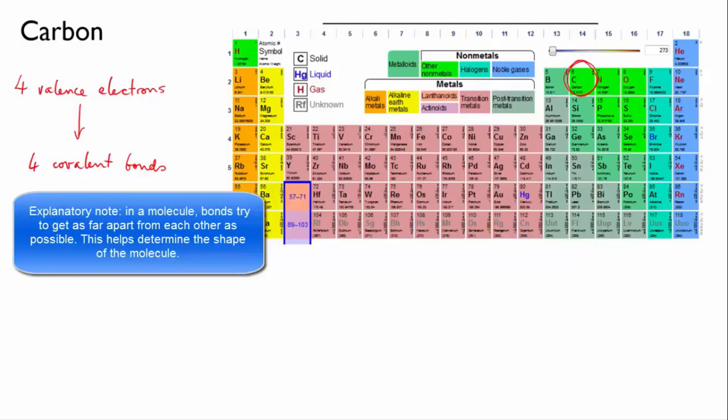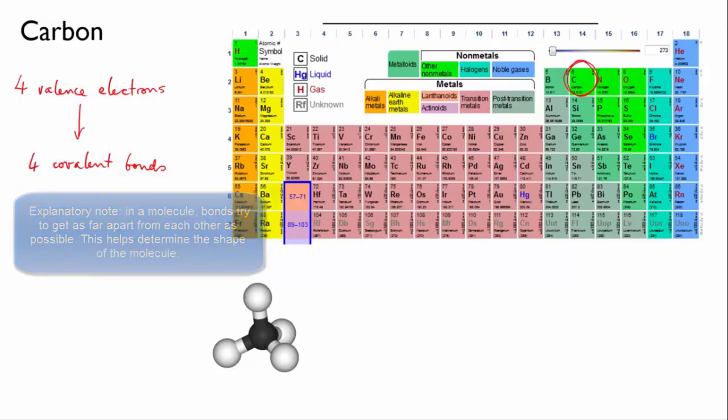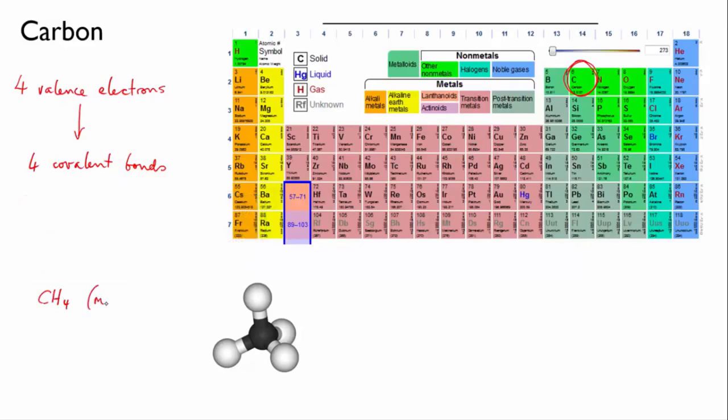But for the case of carbon with four bonds, the way to arrange four bonds so that they are as far apart as possible is to put them in a tetrahedron. The simplest example of this structure is the methane molecule, one carbon bonded to four hydrogens arranged in a tetrahedron. This ball and stick model here shows you the 3D arrangement of the bonds more clearly.